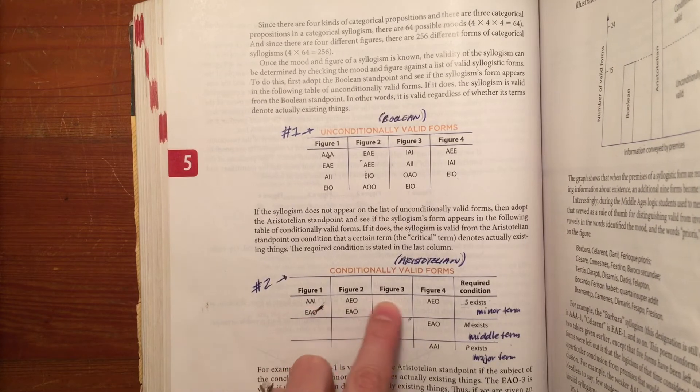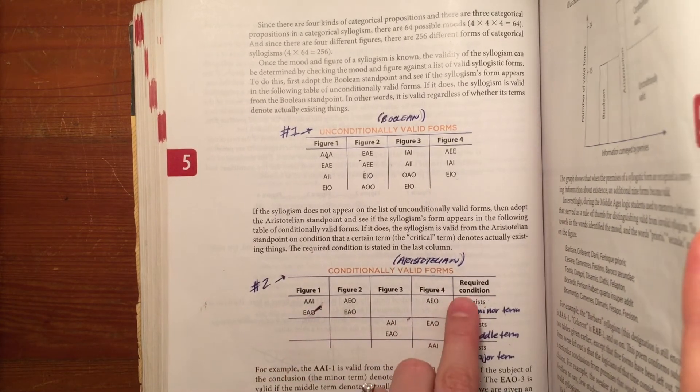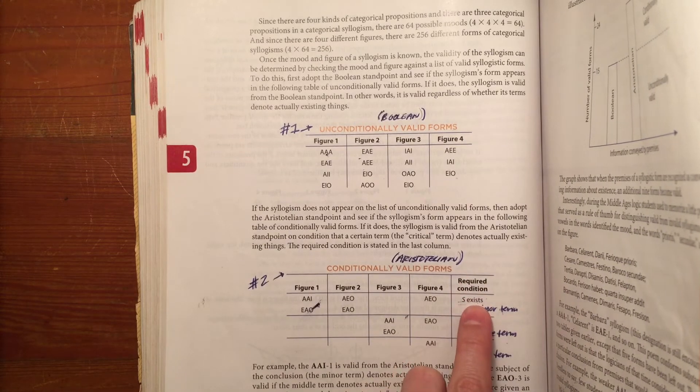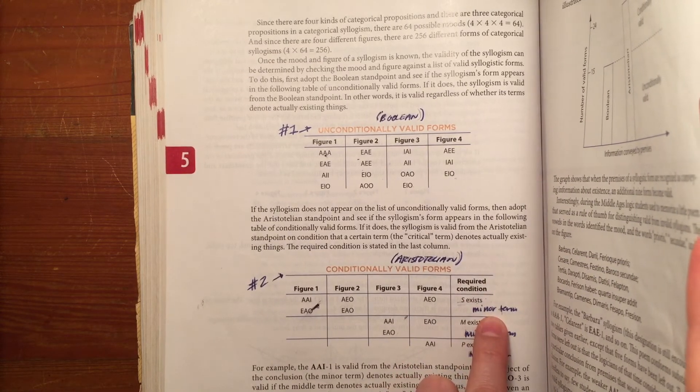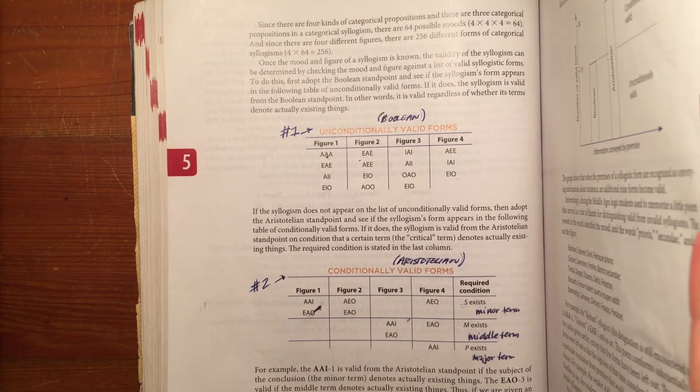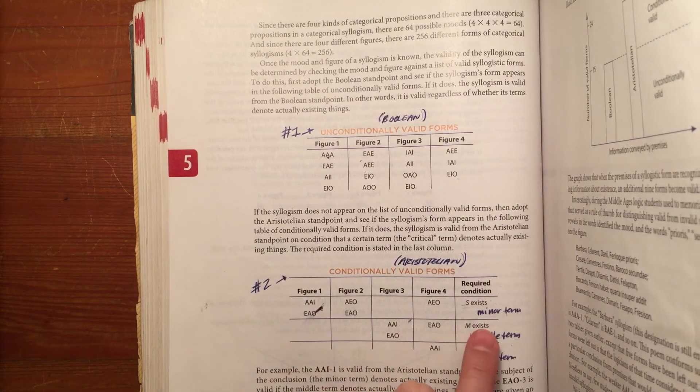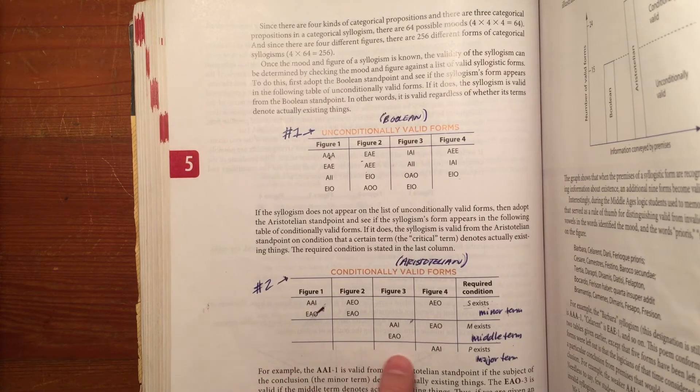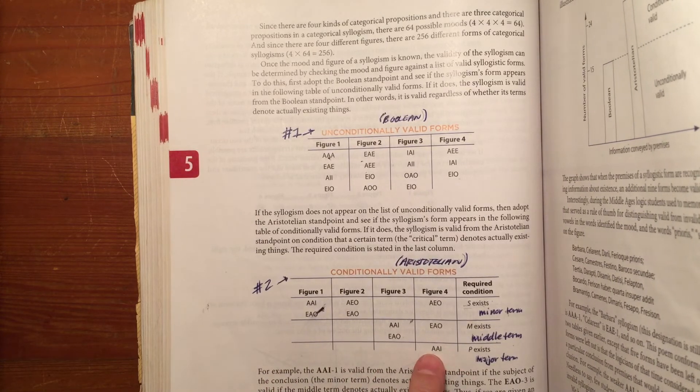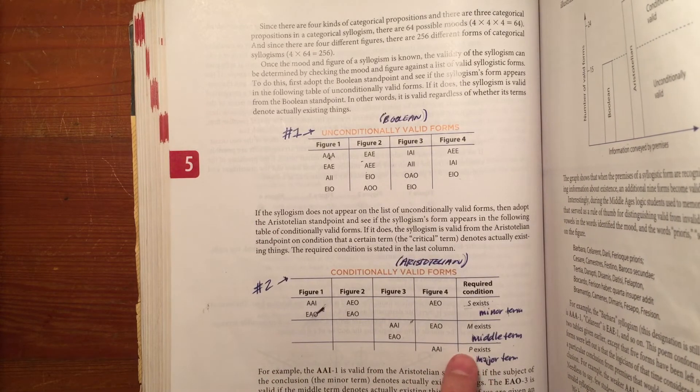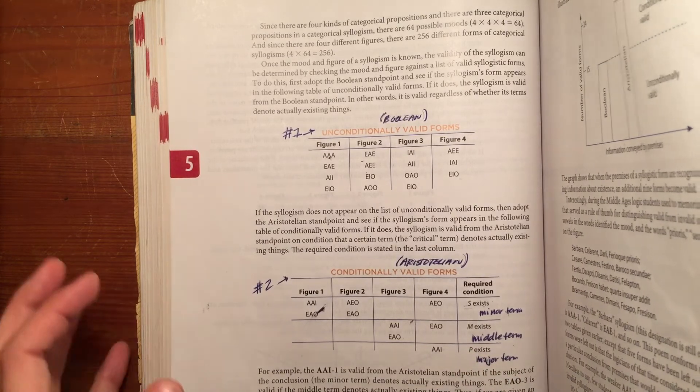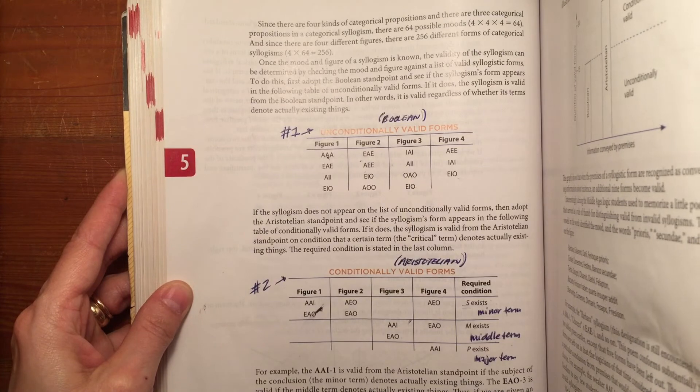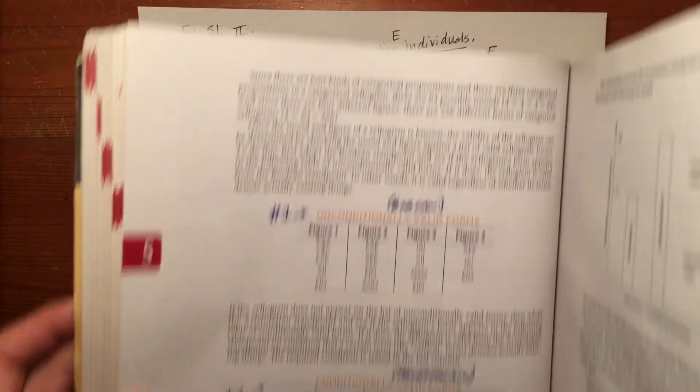So I follow across in the row to see what the required condition is. The required condition is that S exists or that the minor term exists. If it had been on this row, the condition would have been that M or the middle term exists. And if it had been on this row, then the requirement would have been that P exists, the major term. So we need to see whether or not the minor term or the S exists in our original argument.